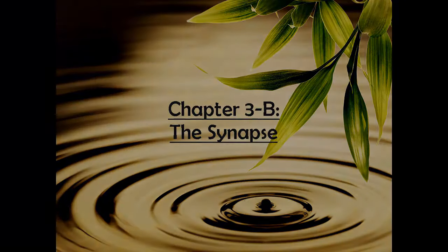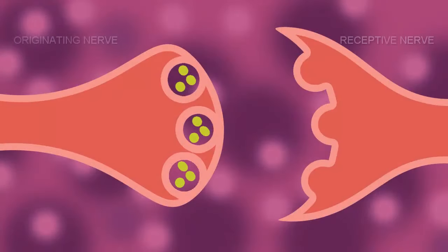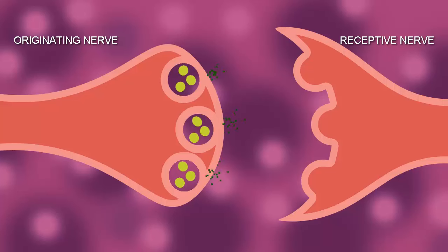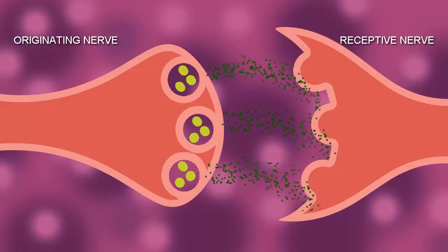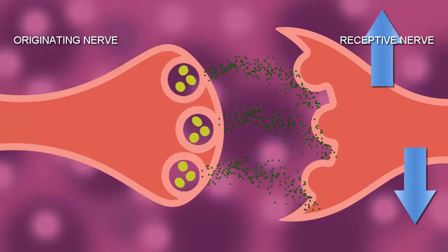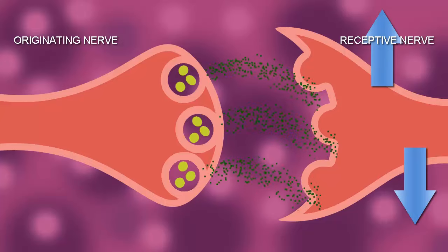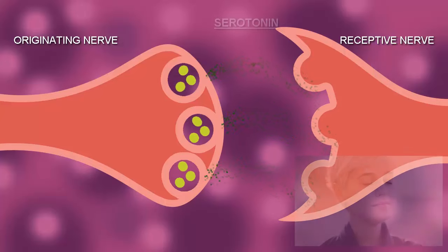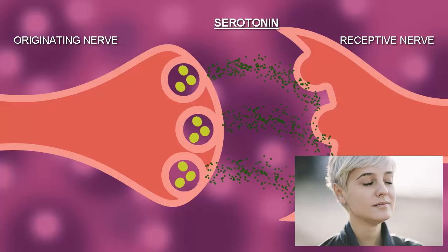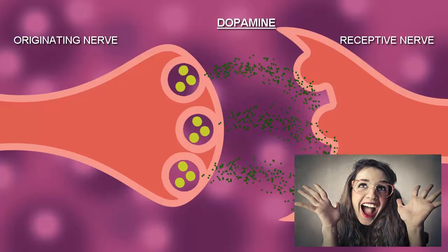The Synapse. How nerve transmission occurs: the originating nerve talks to the receptive nerve across the synapse. The synapses are breaks in the chain of nerves where chemicals can flow from one neuron to another. Chemically, there is an opportunity to either increase or decrease the intensity of the nerve impulse at the synapse. Some chemicals inhibit the intensity of a nerve impulse, and some stimulate the impulse to be of greater intensity.